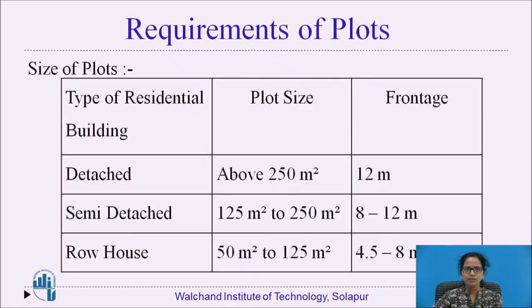These are the requirements of the plots, including the size of the plots depending on the type of residential building, along with the plot size and frontage. For a detached building, the plot size will be above 250 square meters and the frontage will be 12 meters. For a semi-detached building, the plot size will be 125 to 250 square meters and the frontage will be 8 to 12 meters. For a row house, the plot size will be 50 to 125 square meters and the frontage will be 4.5 to 8 meters.